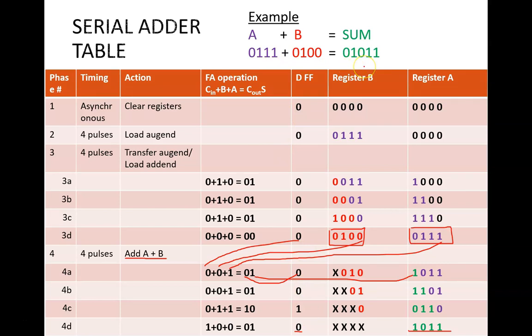A couple of final notes before we wrap up. First, look at these x's shifting into register B. Those would be actual logic values, either zeros or ones, coming from the serial in switch. But the x's indicate that we don't care what the values are. They do not factor in to the final sum, because we stop at this row.